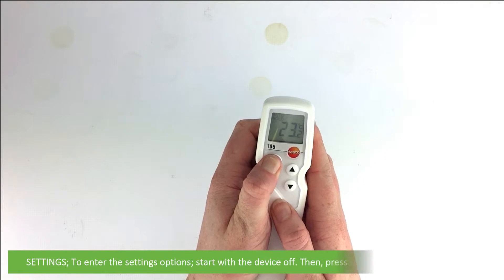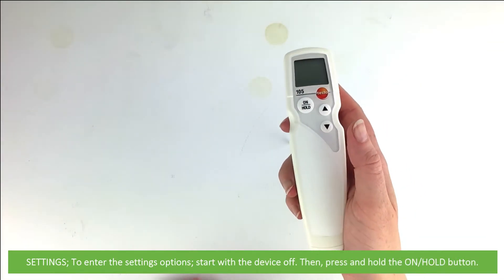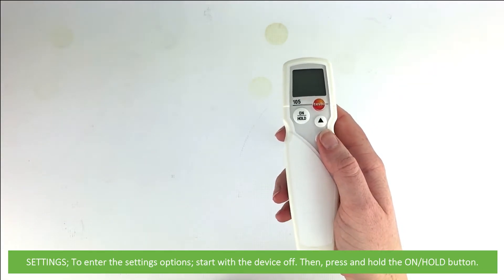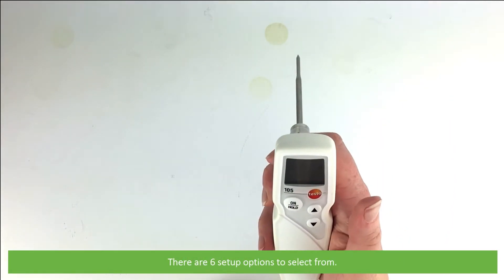Settings: To enter the settings options, start with the device off, then press and hold the on hold button. There are six setup options to select from.